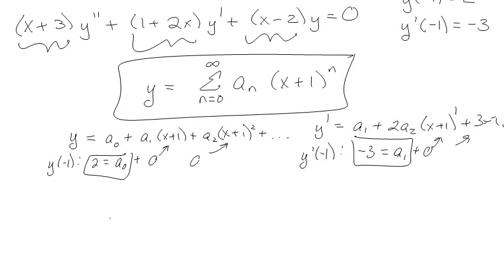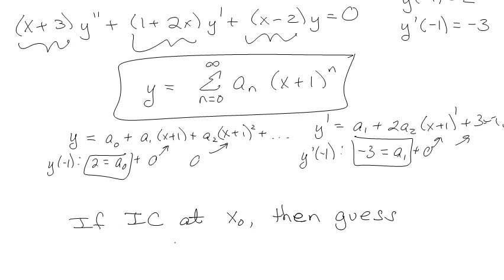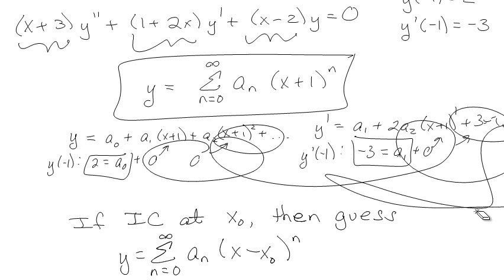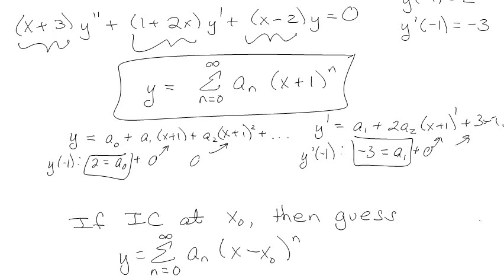So I'm going to say that again just to make sure you've got it. If you have an initial condition set up at x₀, then you want to guess the sum from n equals 0 to infinity of aₙ(x − x₀)^n. It's not any kind of magical thing — it's just because when we plug in the initial conditions, we want all the extra terms to go to zero, and the only way to make that happen is to center the power series differently. That said, let's go ahead and see if we can solve our problem.